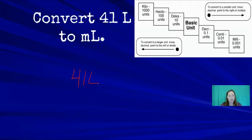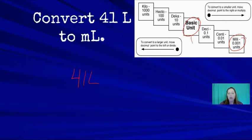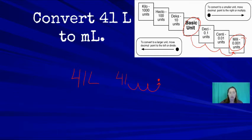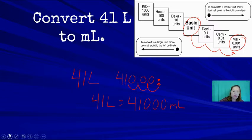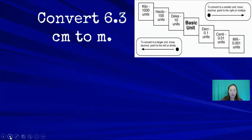Another example: convert 41 liters to milliliters. Converting to a smaller unit, move the decimal three places to the right. So 41 liters equals 41,000 milliliters.